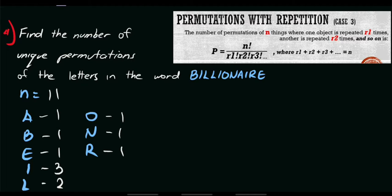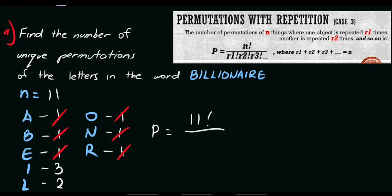Now use the formula: P = N factorial over the factorials of repeated letters. To save time, we can disregard all letters with a count of 1 — that is A, B, E, O, N, and R — since their factorial value equals 1. So we have P = 11 factorial over 3 factorial times 2 factorial, for the letters I and L respectively.